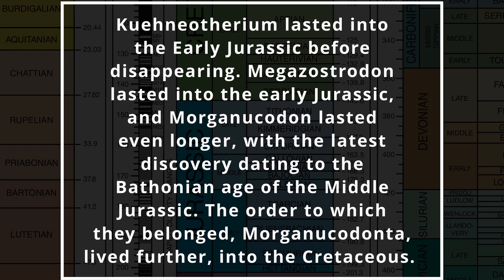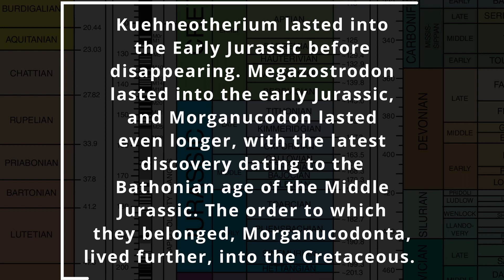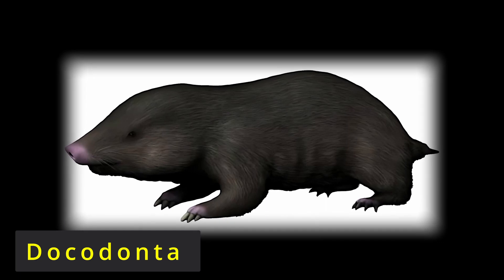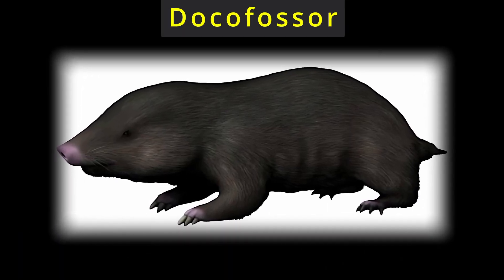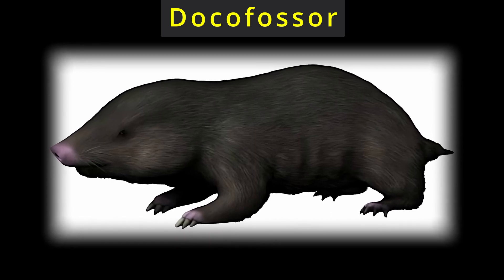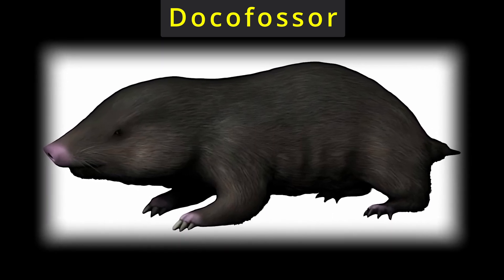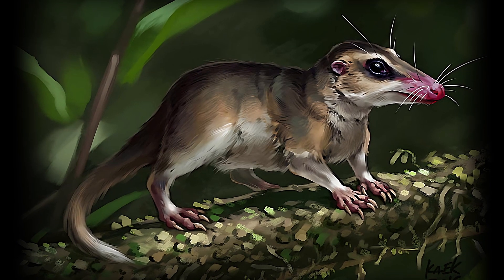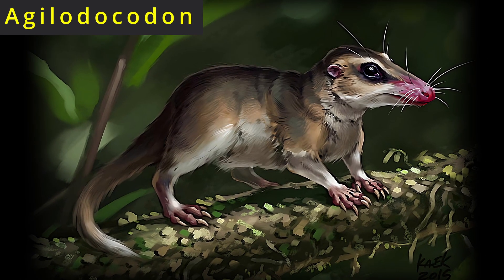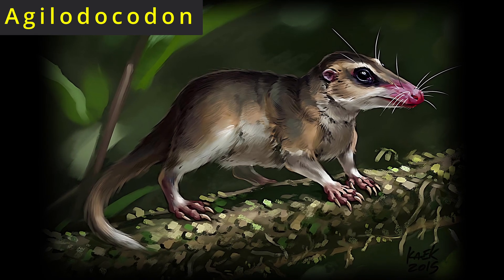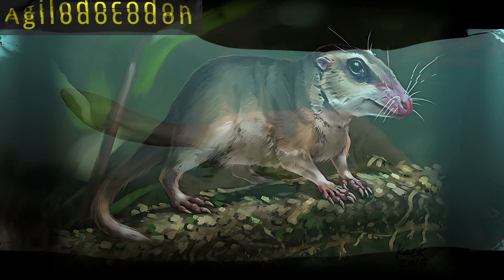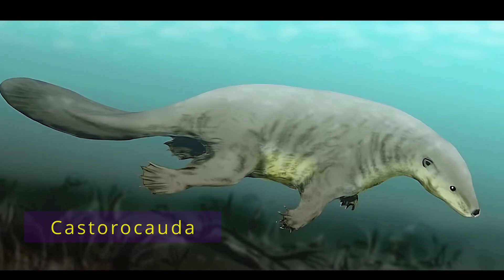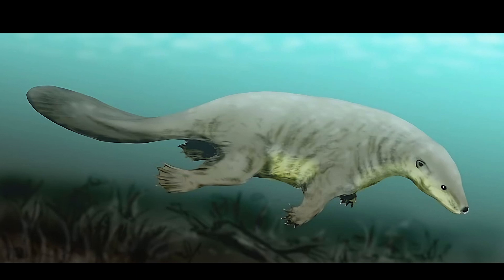The order to which they belonged, Morganucodonta, lived further into the Cretaceous. Let's turn to another order of mammaliaforms: Docodonts, one example of which from the middle Jurassic is Docofosser. Docodonta is an order of now-extinct mammaliaforms with relatively complex molar teeth in contrast to earlier mammaliaforms. The order got going in the middle Triassic and would last into the Cretaceous. Some Docodonts were adapted to new niches, such as Agilodocodon, who could climb trees and may have been herbivorous. Another middle Triassic Docodont is Kistorokoda, who lived a semi-aquatic lifestyle with teeth adaptations suggesting a mostly Piscivorous diet.